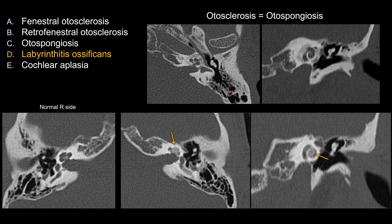For otospongiosis or otosclerosis, instead of abnormal density inside, you should see abnormal lucency outside. A normal otic capsule should be dense bone, so if you see abnormal lucency outside, that's otospongiosis or otosclerosis. In this case, the extensive form surrounding the cochlea is the retrofenestral or cochlear form of otospongiosis.